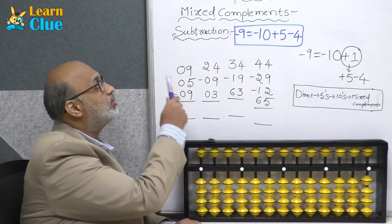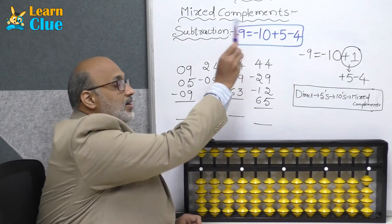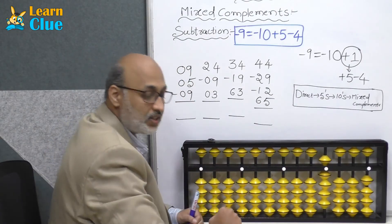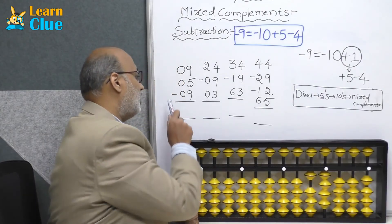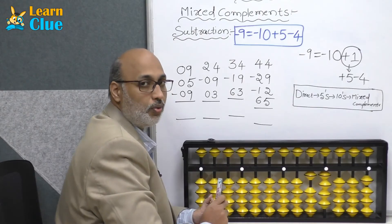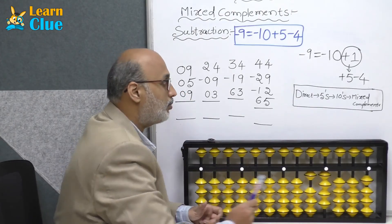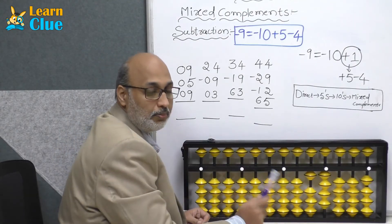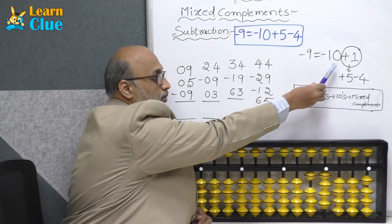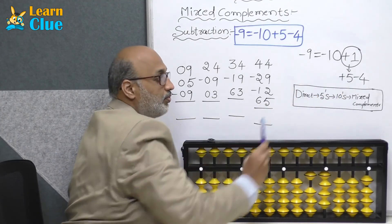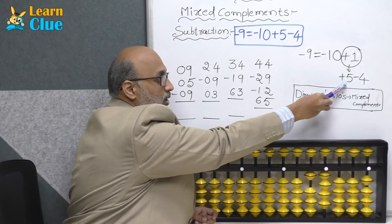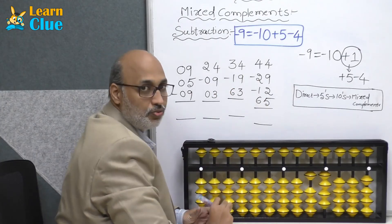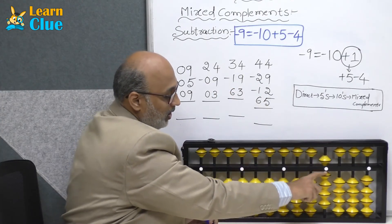Now we are going to discuss about mixed complement subtraction minus 9 technique. Let's see some problems. Plus 9, plus 5 — which is nothing but minus 5 plus 10. Now they are asking minus 9. Who is the friend of 9? It's 1. So what is the technique for minus 9 in 10's complements? It is nothing but minus 10 plus 1. Here minus 10 can be done but plus 1 is not possible. So in 5's complements for plus 1 it is plus 5 minus 4. Replace this plus 5 minus 4 in the place of plus 1 — it becomes minus 10 plus 5 minus 4. Apply the same: minus 10 plus 5 minus 4. The answer is 5.